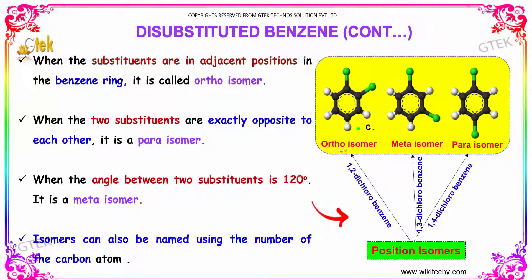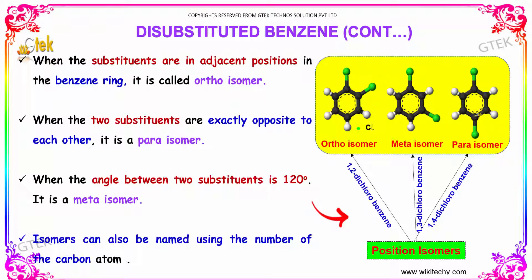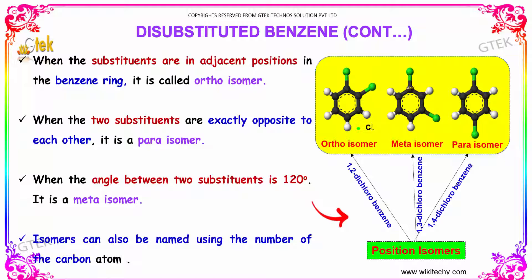When the substituents are in adjacent positions, the benzene is called ortho. When the substituents are in exactly opposite directions, that is 180 degrees apart, it is known as the para isomer. If the substituent is inclined at an angle of 120 degrees with the first substituent, it is known as the meta isomer.